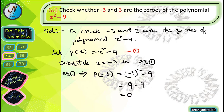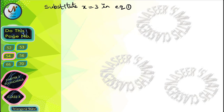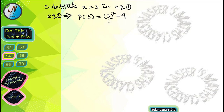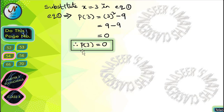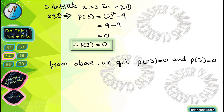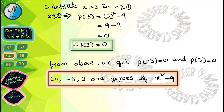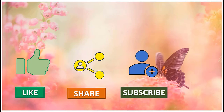After simplification, (-3)² = 9, so p(-3) = 9 - 9 = 0. Therefore p(-3) = 0. Next substitute x = 3 in equation 1: p(3) = 3² - 9 = 9 - 9 = 0. Therefore p(3) = 0. From above, p(-3) = 0 and p(3) = 0, so -3 and 3 are zeros of x² - 9. Please like, share, and subscribe to our channel for latest updates by pressing the bell icon.